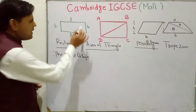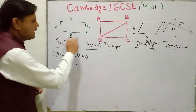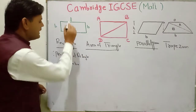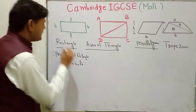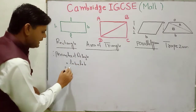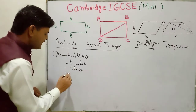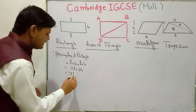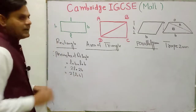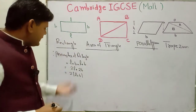Perimeter is the sum of outer lengths: L plus L, where L means length, plus B plus B, where B means breadth. So L and L make 2L, and B and B make 2B. If you take 2 as common, then 2 times (L plus B) is the perimeter of the rectangle.